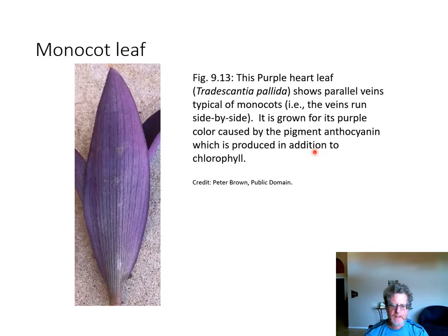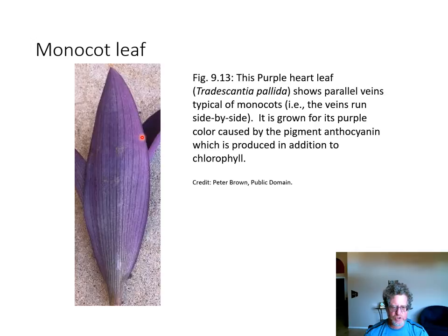In a monocot leaf, the veins run parallel. This leaf also has a red pigment — that's why people grow it. It's called purple heart, a very pretty leaf. Chlorophyll is the main pigment, but some plants have accessory pigments to help capture more sunlight. This one in particular is striking because it's full of anthocyanin.